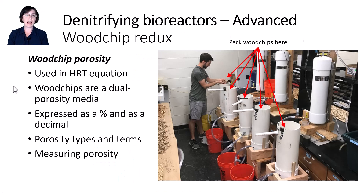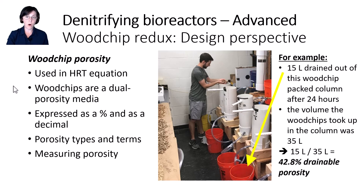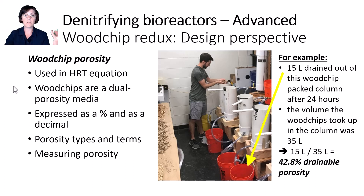I'll come back to compaction in a minute, but first let me explain how we estimate woodchip drainable porosity in the lab. You saturate the woodchips for 24 hours in large containers and then measure the water that drains out over the next 24 hours. Most of the water drains out pretty quickly, but measuring over 24 hours is the standard for measuring gravitational water. You divide the volume of water that drained out by the volume of the column your woodchips occupied, giving you a ratio of volumes — your drainable porosity. All of the water that drained out easily occupied those really big pore spaces, which are your drainable pores.